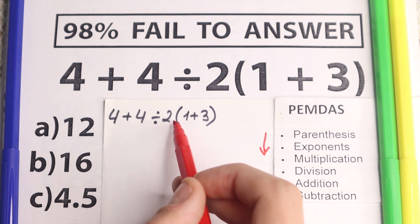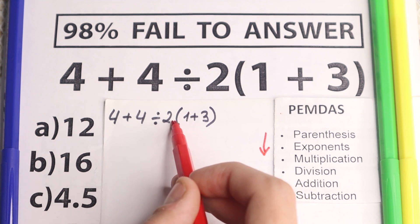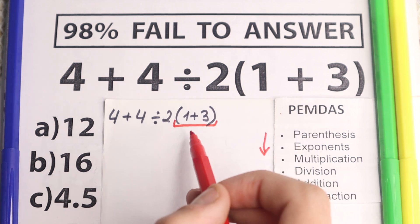So addition, division, multiplication, yeah, we have parentheses in the end of the expression. So this is our first step. And this is not hard, 1 plus 3 equal to 4.